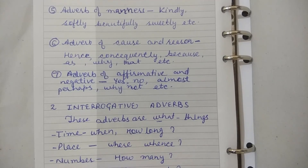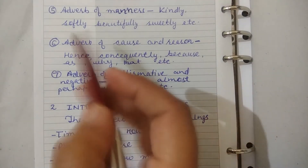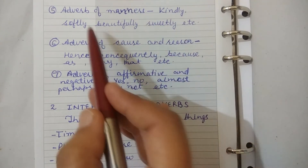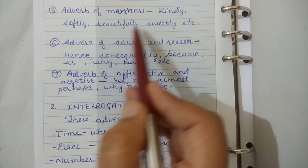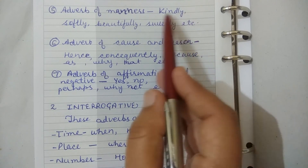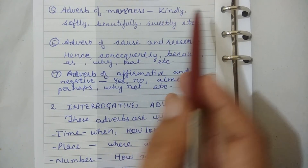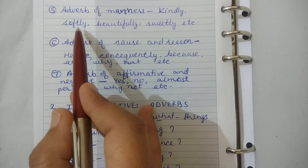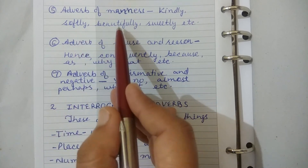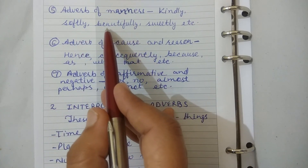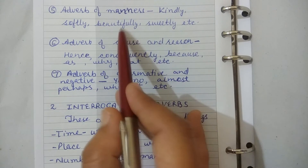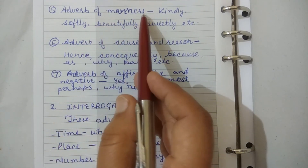Our fifth example is adverb of manners. Examples: kindly, softly, beautifully, sweetly, etc. For example: Kindly grant me leave for two days. She speaks softly. Students perform beautifully. These all are examples of adverb of manners.